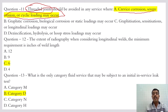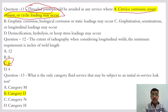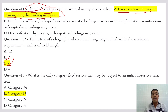Regarding the extent of radiography when considering longitudinal welds, the minimum requirement in terms of weld length is 6 inches. Whenever we perform radiography, when we consider longitudinal welds, the minimum weld length requirement is 6 inches.